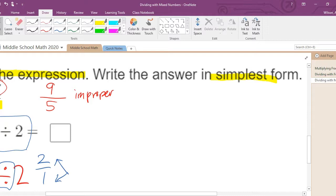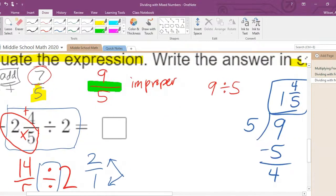Numerator goes in the box. Denominator goes outside the box. How many times does five go into nine? One time. One times five is five. We have nine minus five, which is four. We write this whole thing as one and four fifths. So the final answer to this expression involving fractions is one and four fifths.